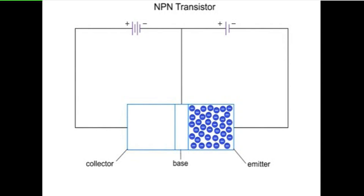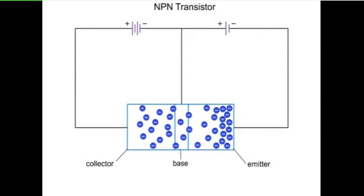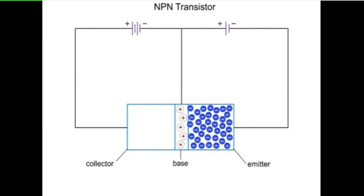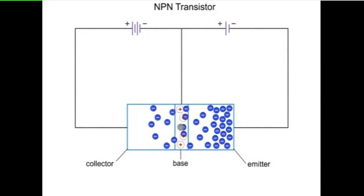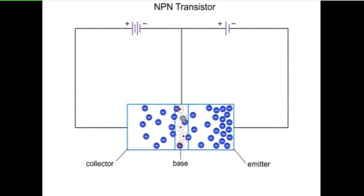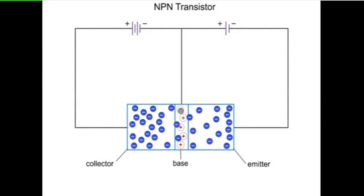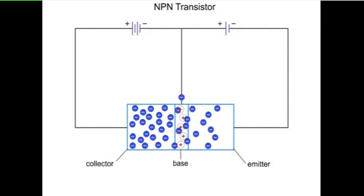Most of the emitter carriers diffuse through the thin base region because they are attracted by the collector region. Some of the electrons are attracted by the holes in the base region and will move off through the right side, shown here. This is a very small amount compared to the current moving through the base into the collector.